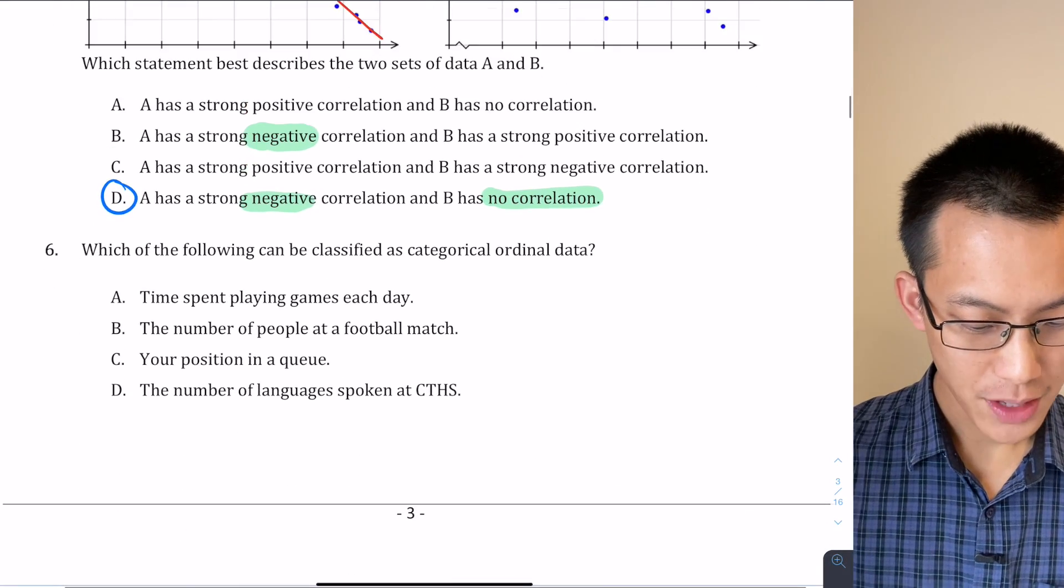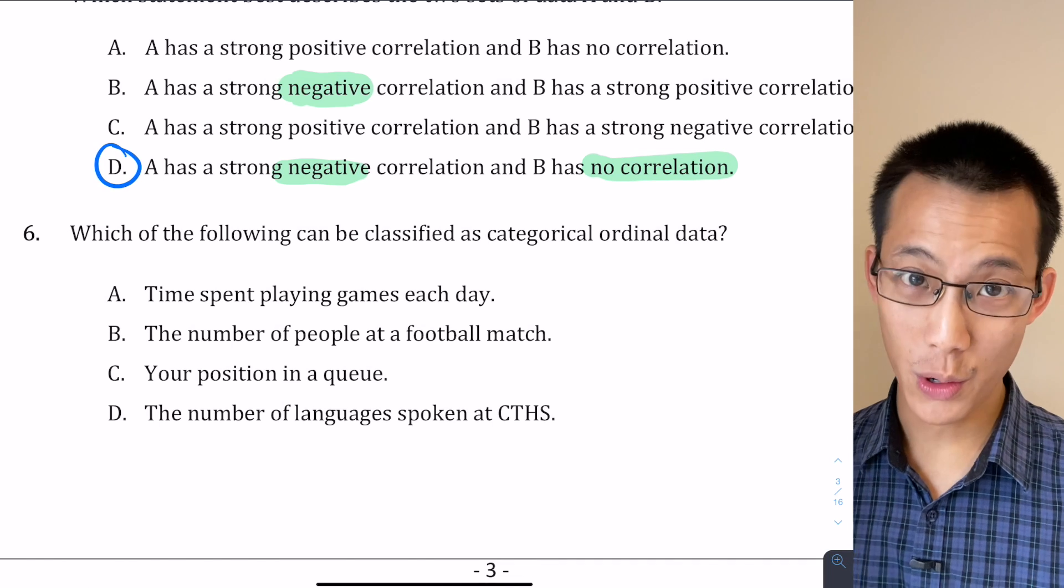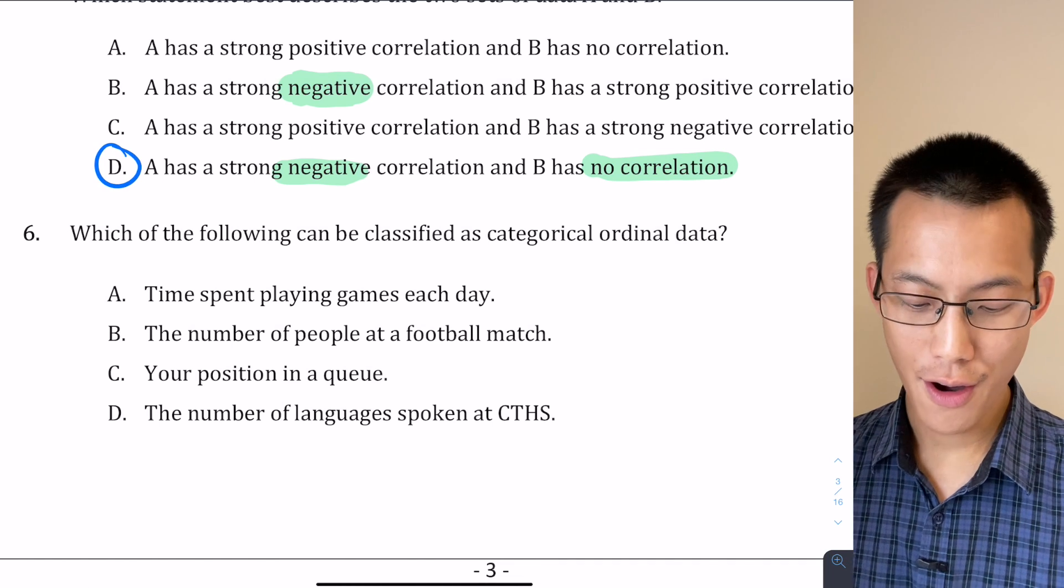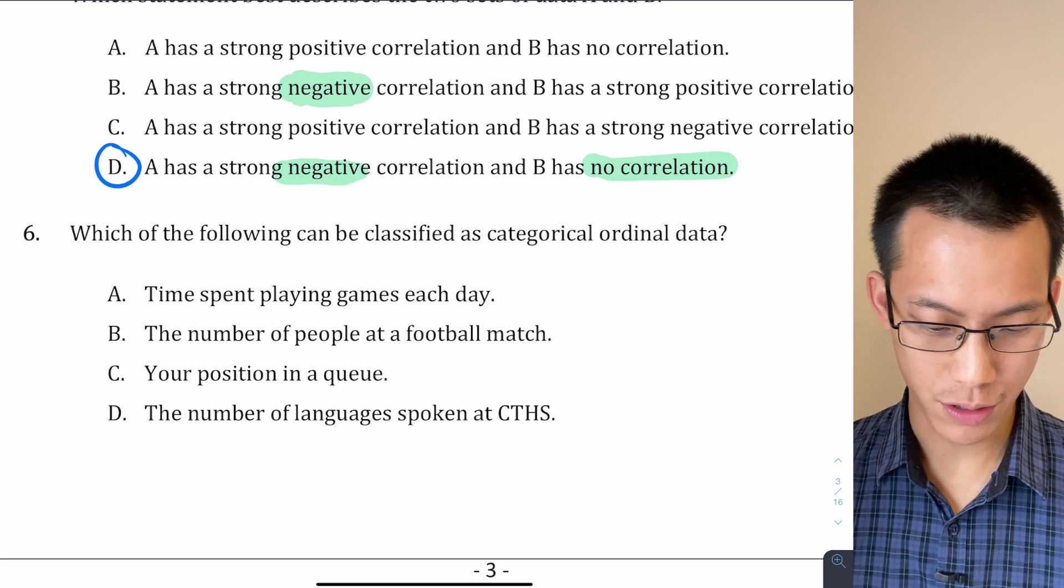Okay, moving on to six. Which of the following can be classified as categorical ordinal data? So you need to know what these two important words are: categorical and ordinal.